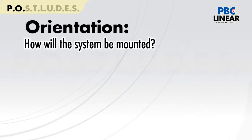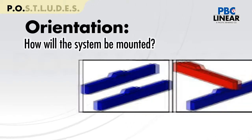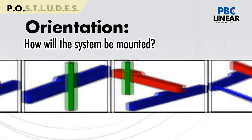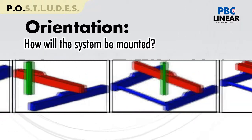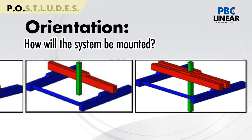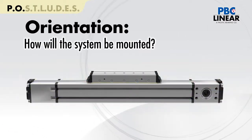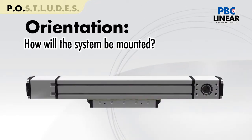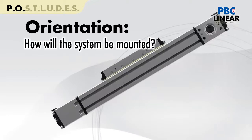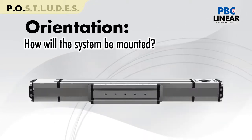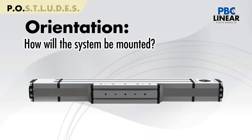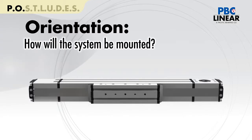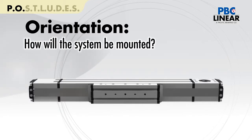O is for orientation. It is very important to understand the orientation of the product, whether the product will be mounted in the traditional horizontal fashion, or will it be mounted horizontal inverted, maybe on an angle, or even on its side. In any case, the selection of a product may be greatly affected by its orientation.